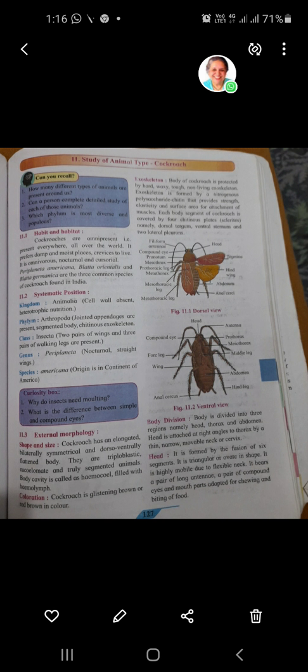Color of cockroach kaisa hota hai — color aapne sabne cockroach dekhe hue hain, aur yahan par aap figure mein bhi dekh sakte hain — cockroach is glistening brown and reddish brown in color. About the exoskeleton: body of the cockroach is protected by exoskeleton. Exoskeleton hota hai inme, aur woh chitin se bana hota hai — that's why it is known as chitinous exoskeleton.